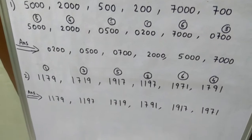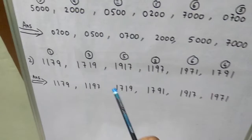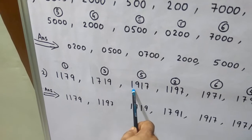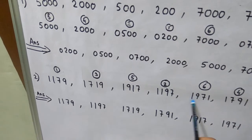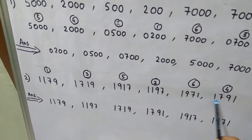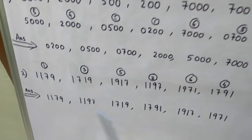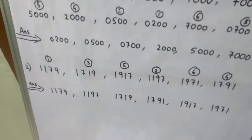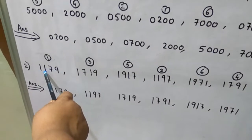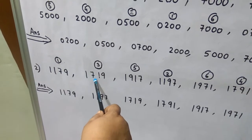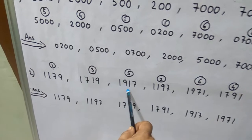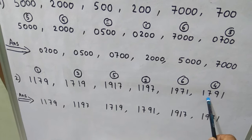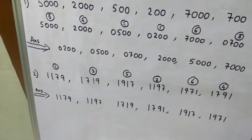One more example, a little different. The numbers are: 1179, 1790, 1917, 1197, 1971, and 1791. First, count the numbers: 1, 2, 3, 4, 5, 6 — there are 6 numbers. Second rule: are all numbers 4-digit numbers? Yes — 1179, 1719, 1917, 1197, 1971, and 1791 are all 4-digit numbers.